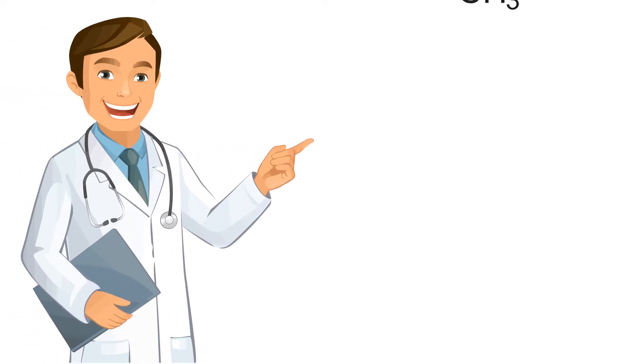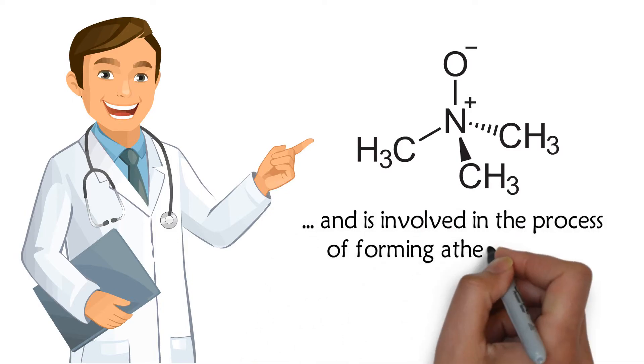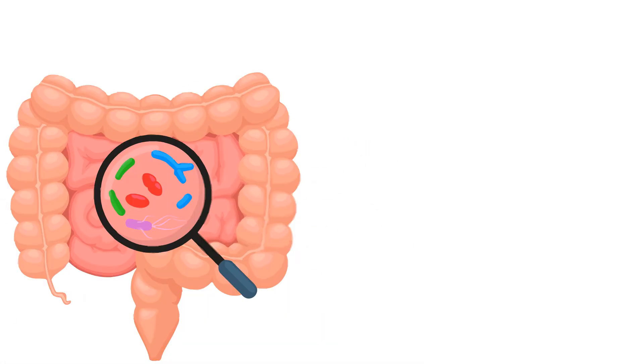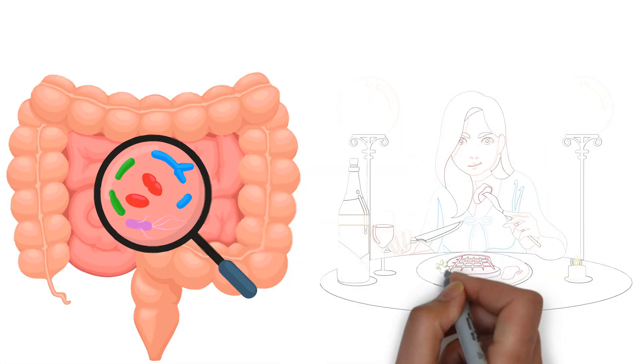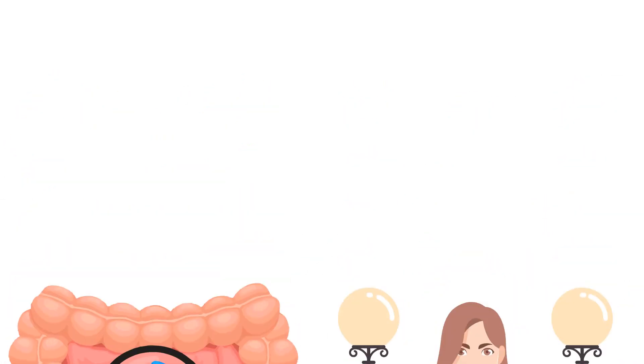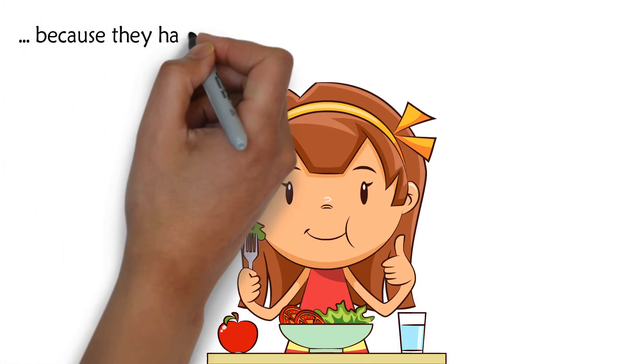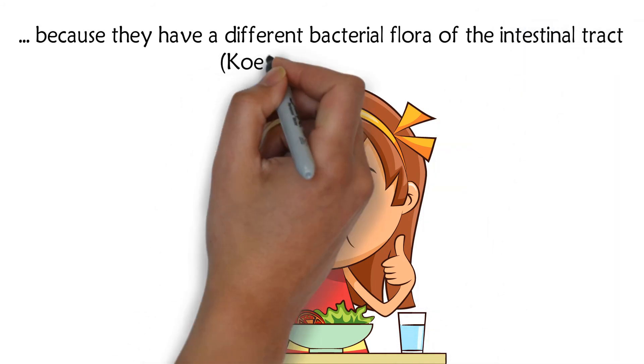This research documents that TMAO triggers inflammation and is involved in forming atherosclerosis. The bacterial flora of people eating animal-derived products produces TMAO. Vegans and vegetarians don't produce much because they have a different bacterial flora in the intestinal tract.